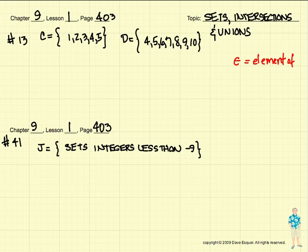Sets of information are things that are in the squiggly bracket. For example, in Chapter 9, Lesson 1, for problem number 13,